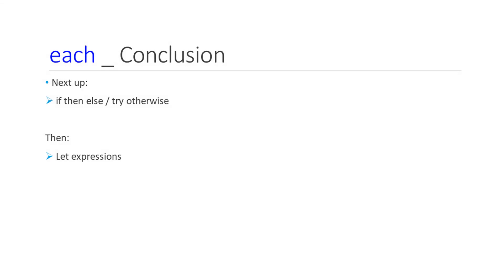This concludes the training on each underscore and lambda notation. Next up, we'll review if-then-else and try-otherwise expressions.